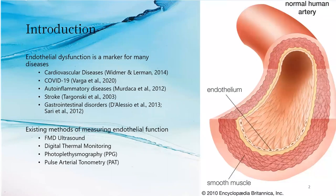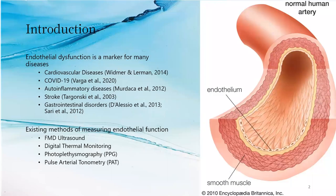Endothelial dysfunction is a marker for many diseases, including the two biggest killers in the world: heart disease and COVID-19. A marker is a symptom that appears before the disease actually shows symptoms. So this means that if you can detect endothelial dysfunction, then you can check for these severe diseases. It is an excellent screening tool.